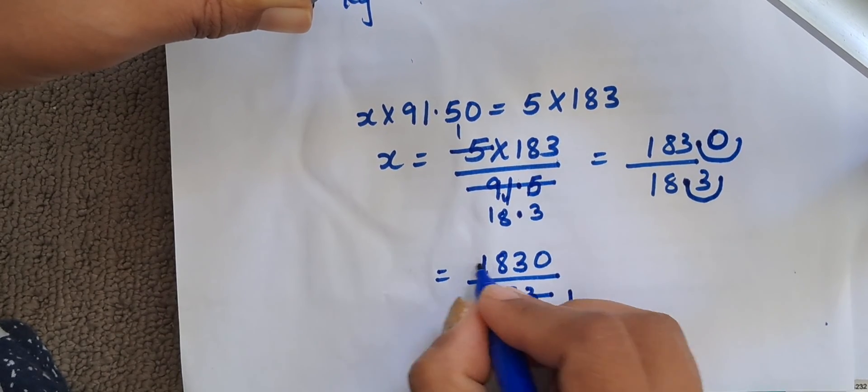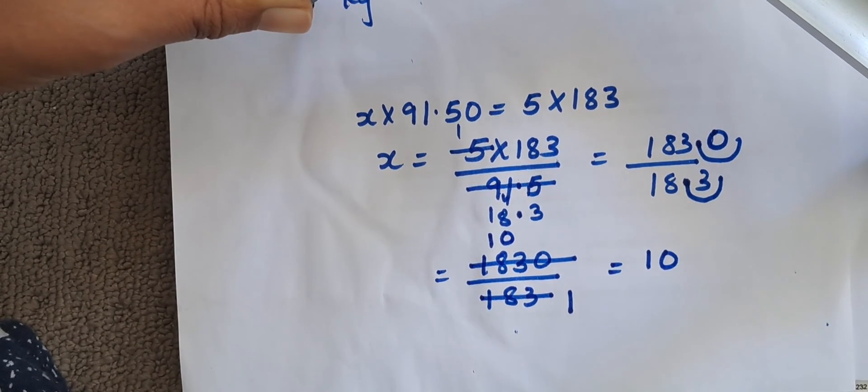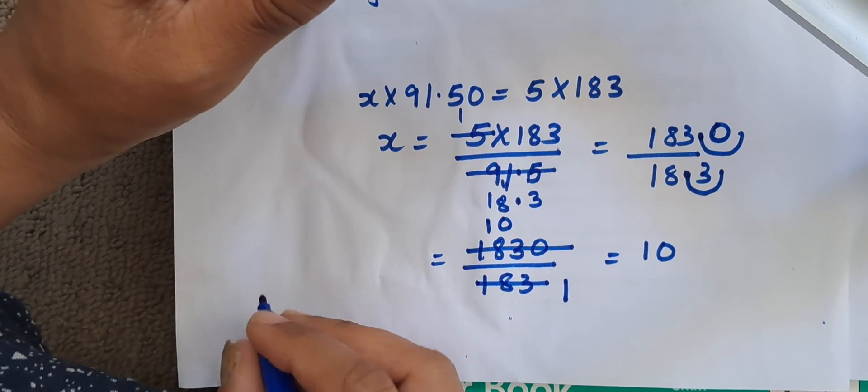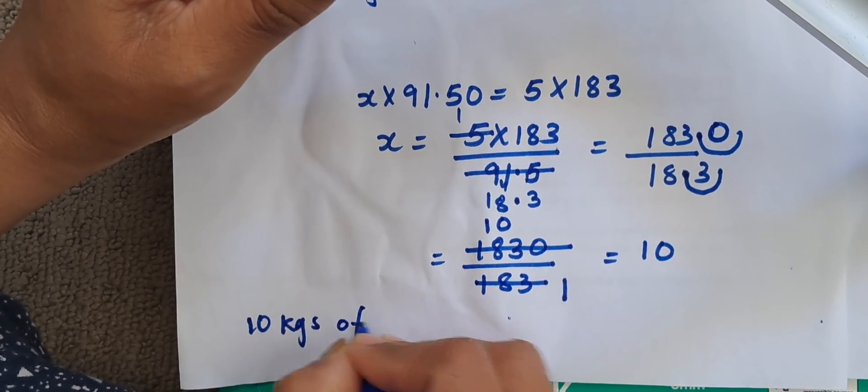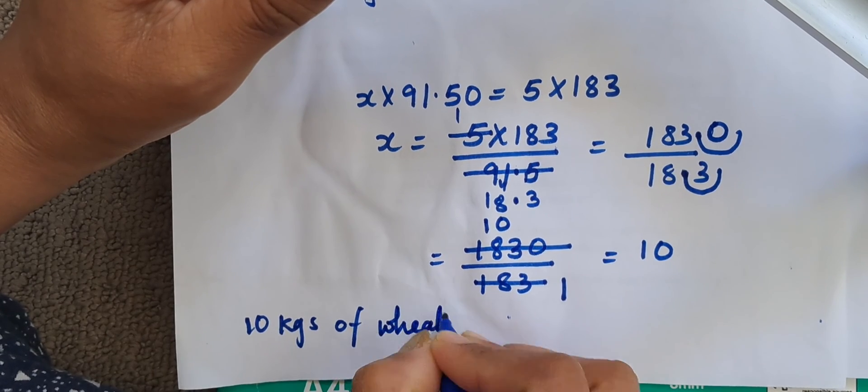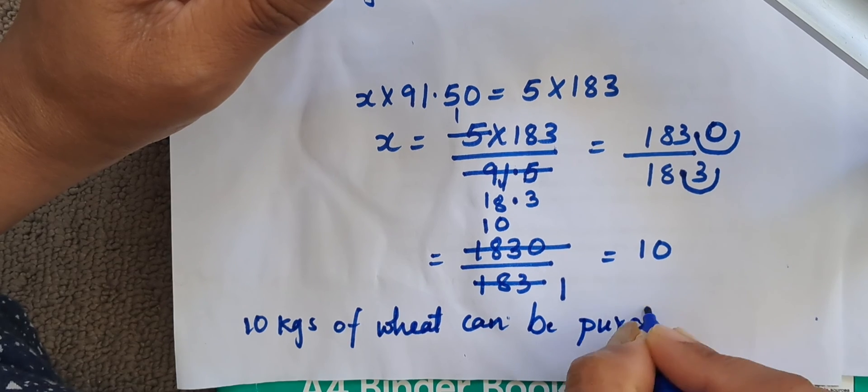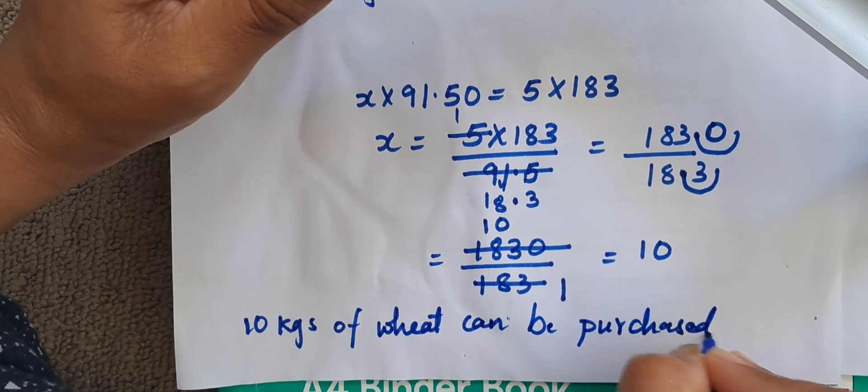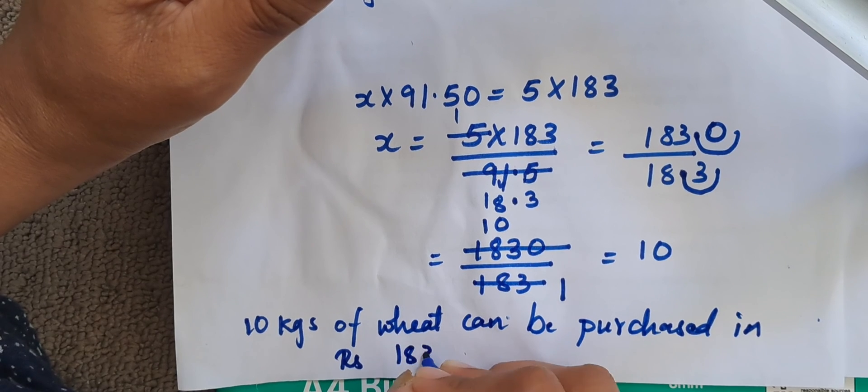183 times 1, 183 times 10. So 10 is the answer. So we can write as 10 kgs of wheat can be purchased in Rs. 183.